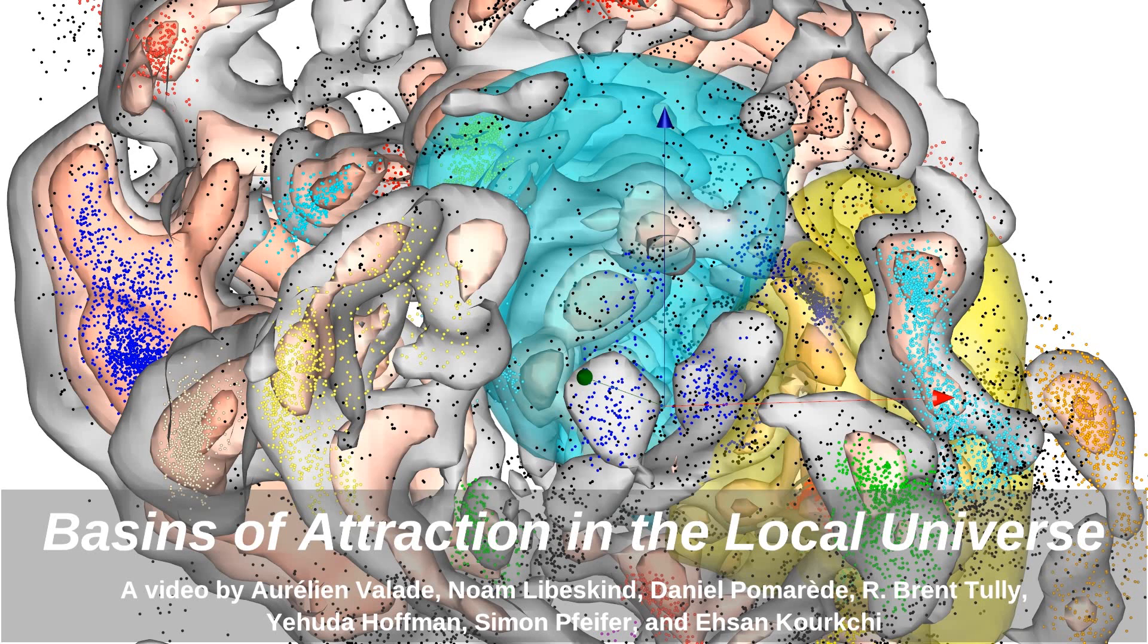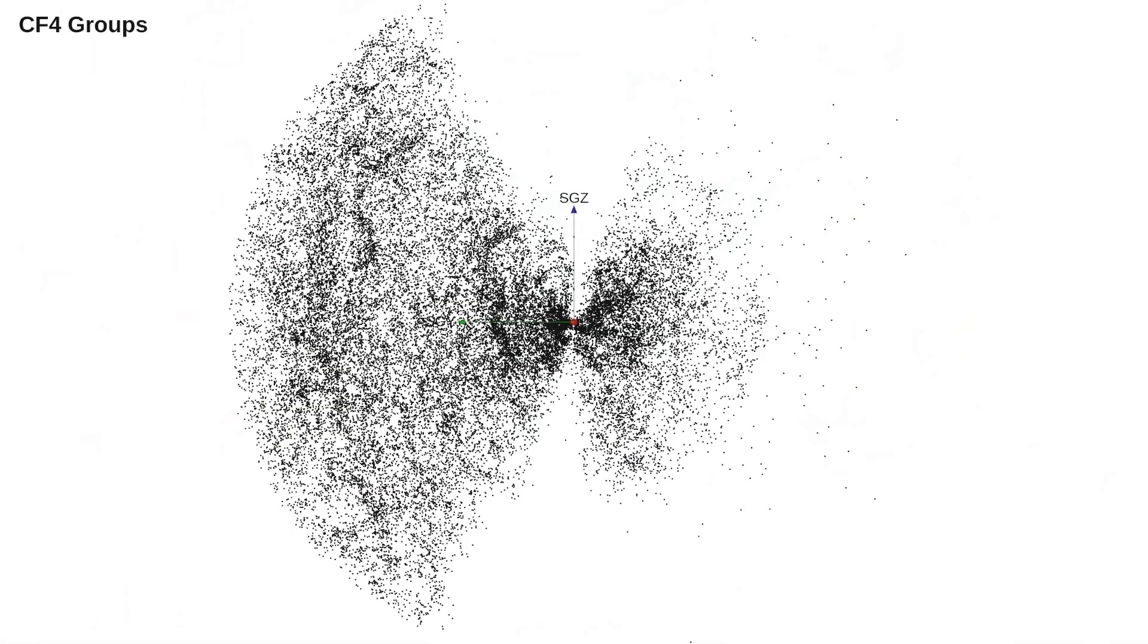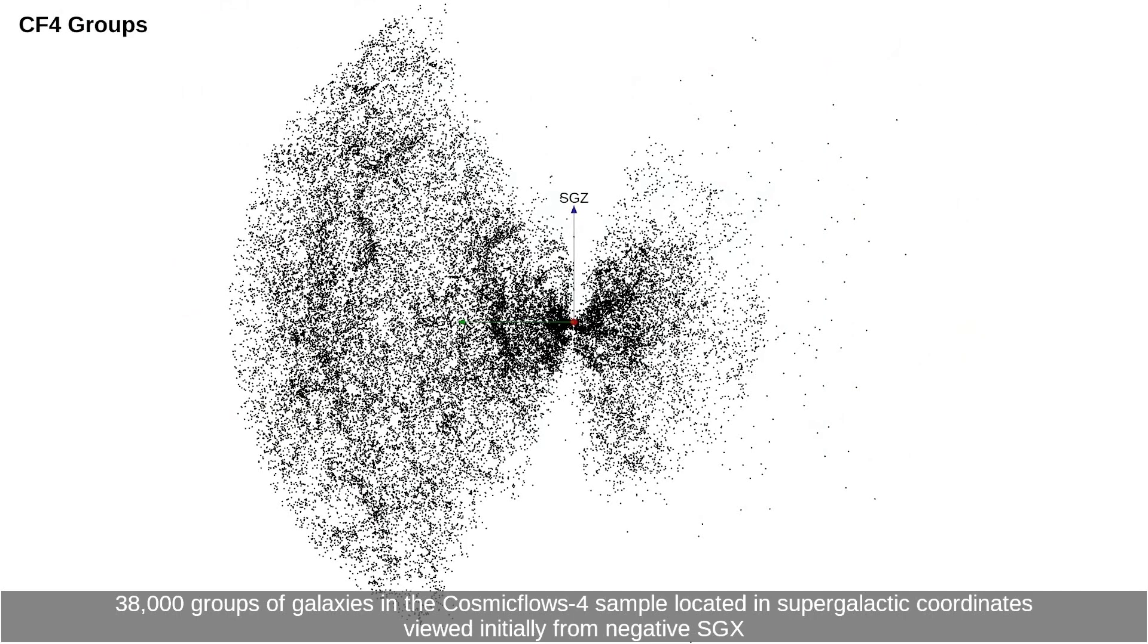Basins of attraction in the local universe. 38,000 groups of galaxies in the Cosmic Flows 4 sample located in supergalactic coordinates viewed initially from negative SGX.